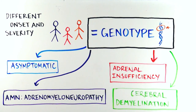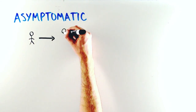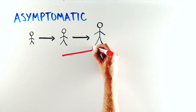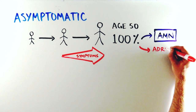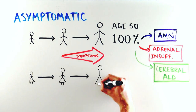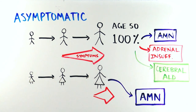Let's explain how this works by talking about each of the ALD phenotypes in more detail. Let's start with the asymptomatic phenotype. All patients with ALD are completely asymptomatic for the first few years of life. During childhood and adolescence, men may begin developing symptoms, and by age 50, essentially 100% of men with the ALD genotype will have developed at least one of the ALD phenotypes. Women with the ALD genotype rarely develop symptoms before reaching adulthood, and the symptoms are usually limited only to adrenomyeloneuropathy, or AMN.